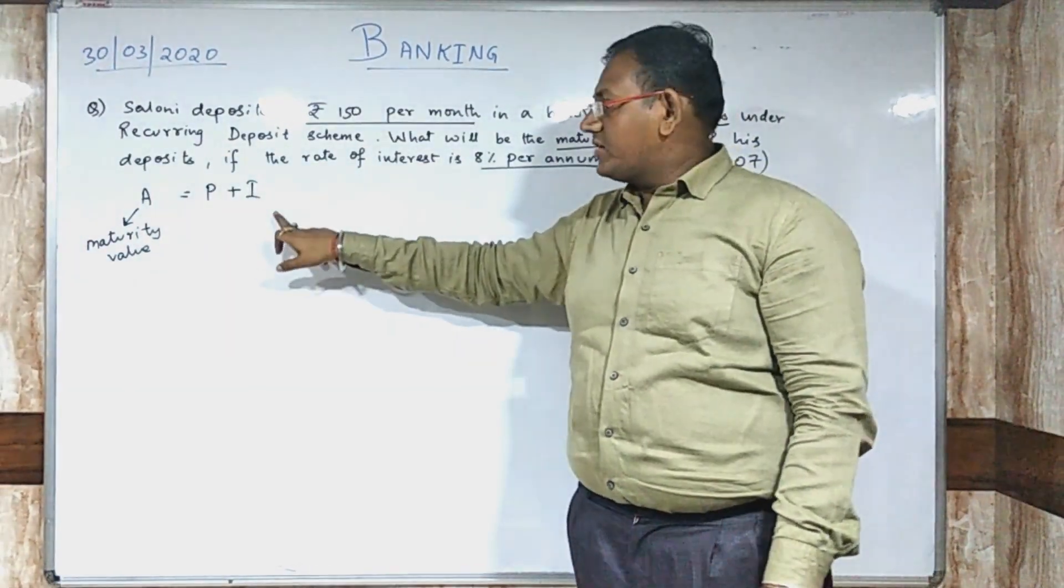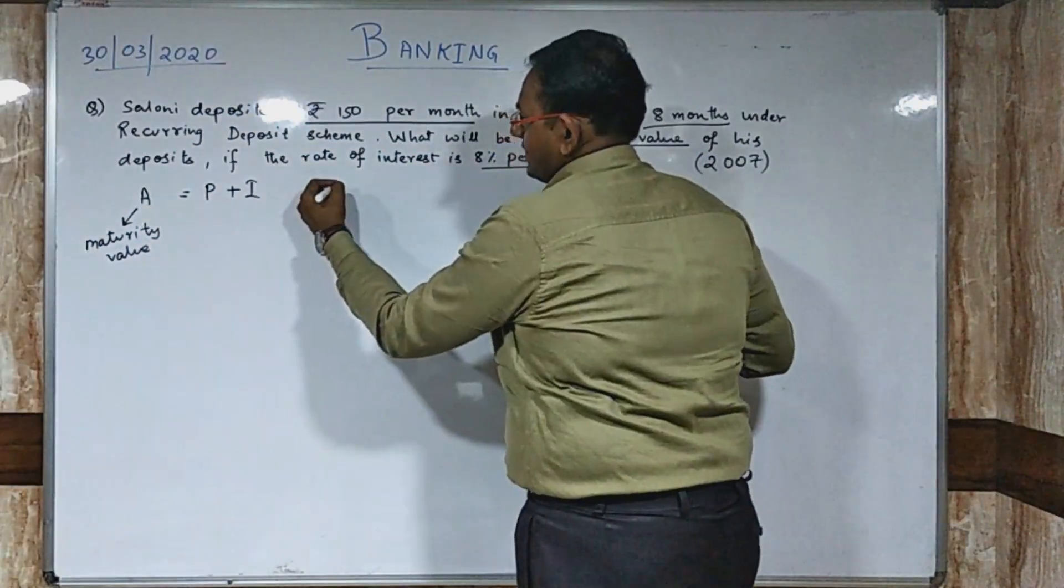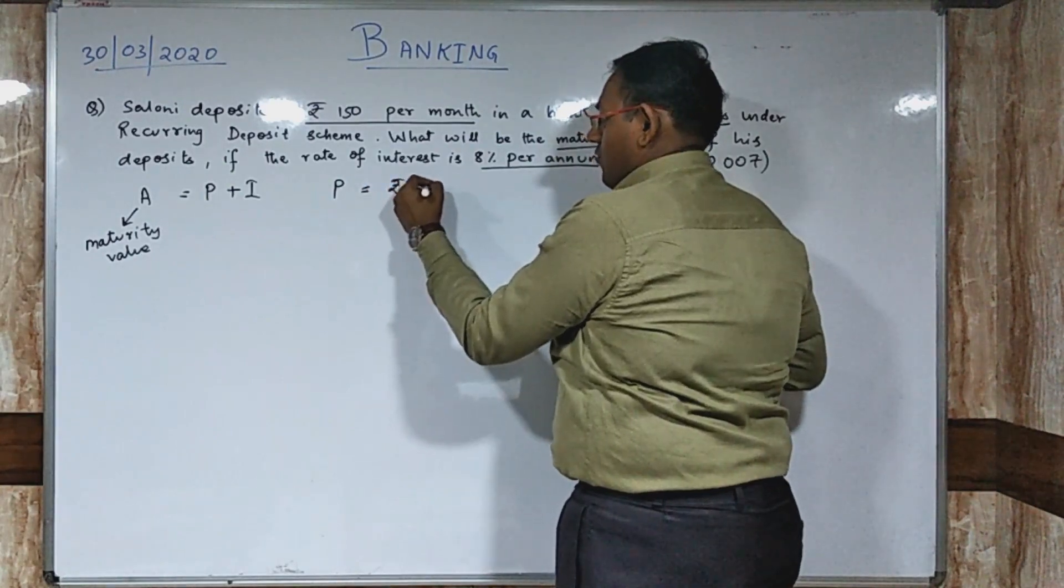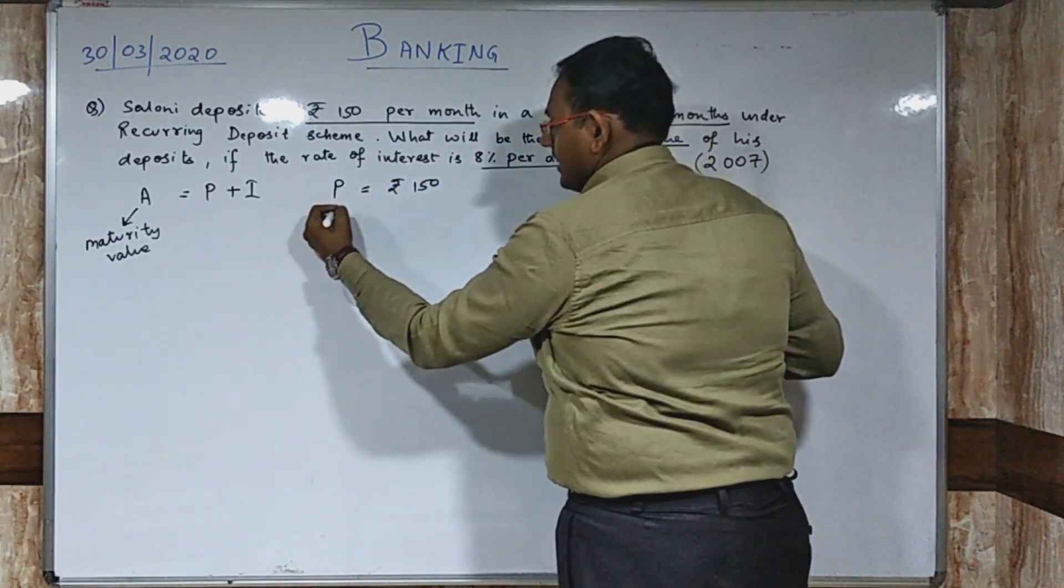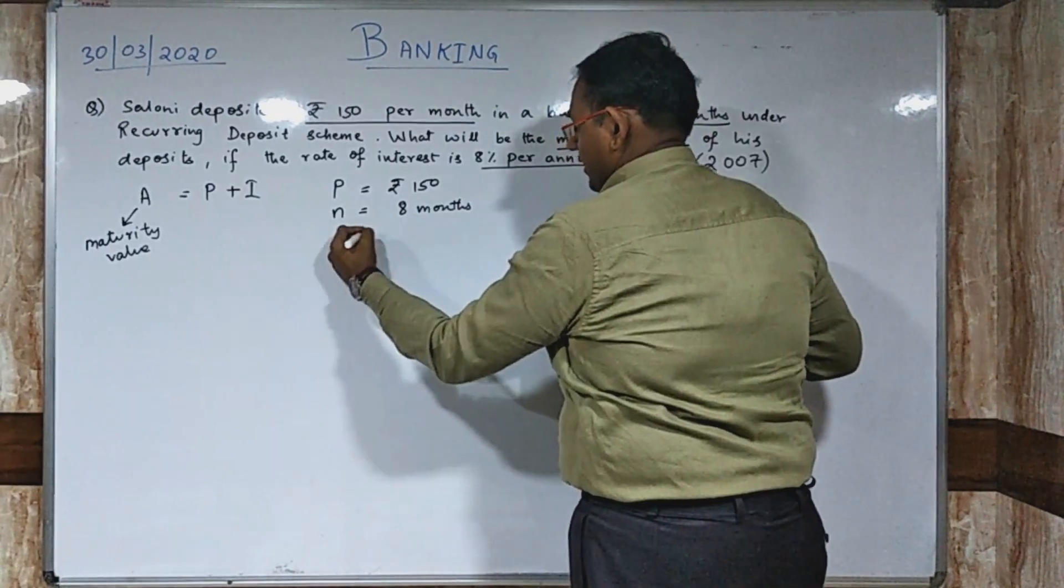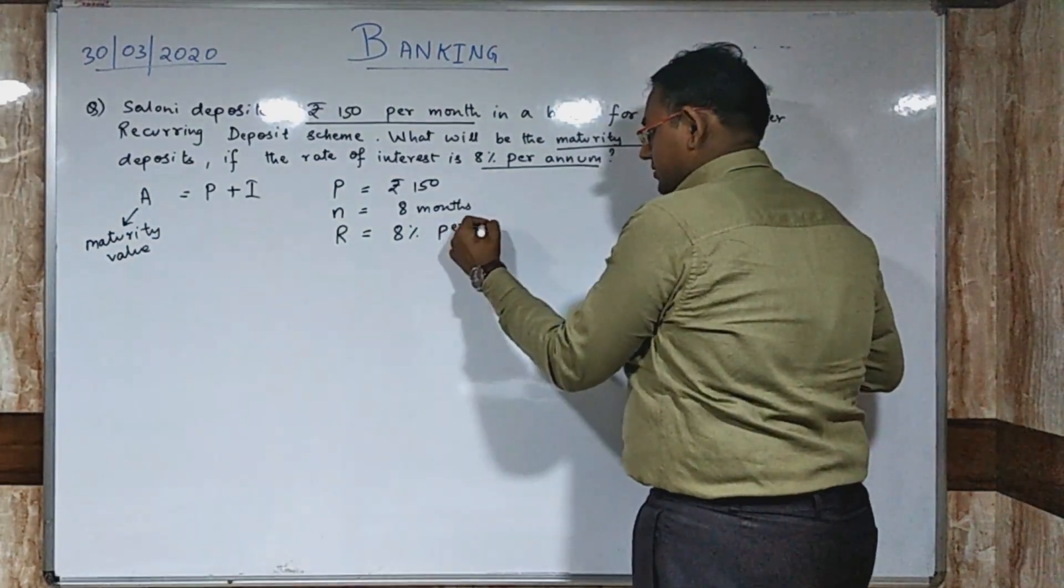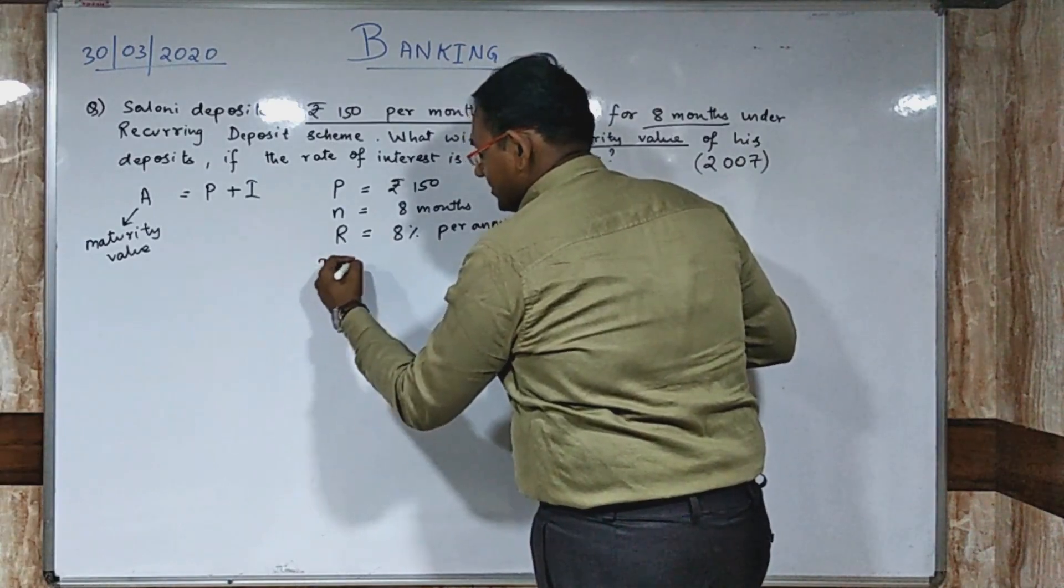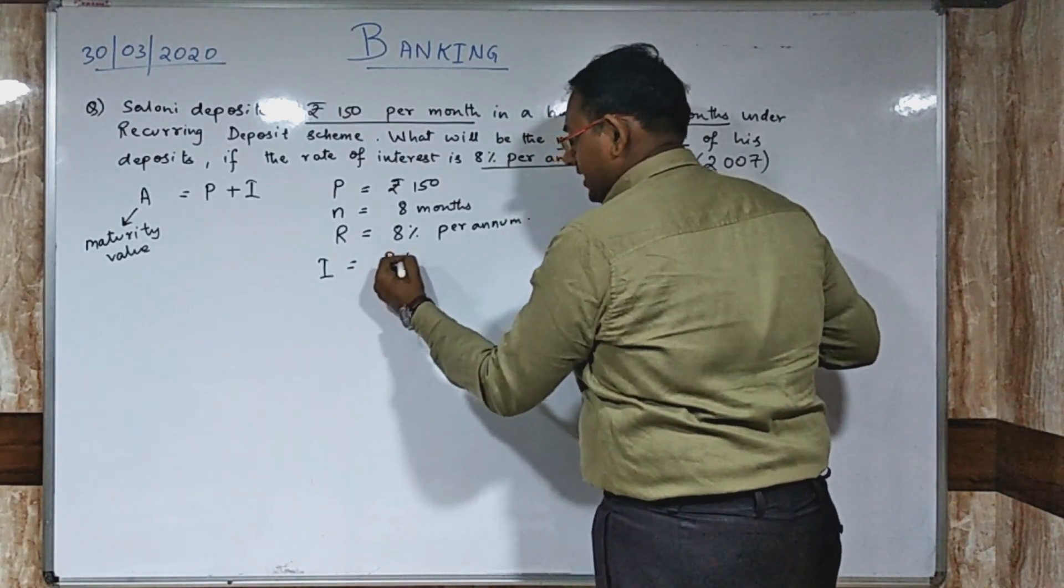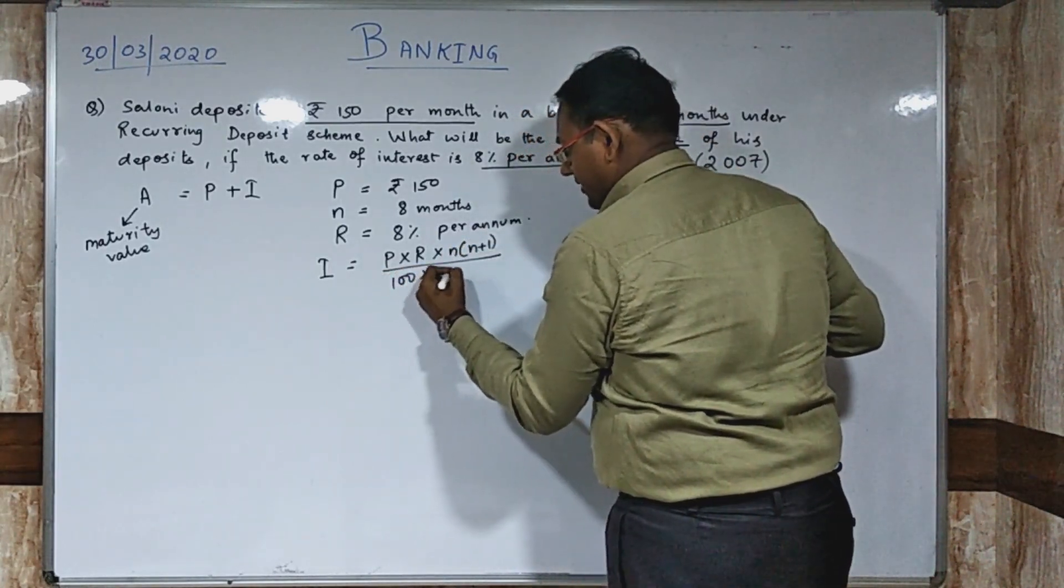For finding out the amount, first you need to remember your interest. You need to find out interest, then add that interest with the principle, then we will get the Maturity Value. First, how to calculate interest. Let us write the data. The principle is Rs. 150, your time N is 8 months, and your rate of interest is 8% per annum.